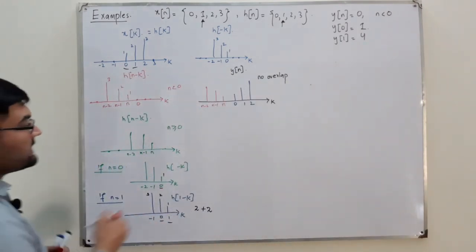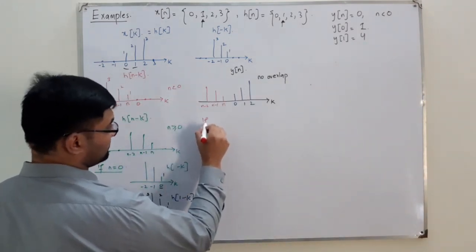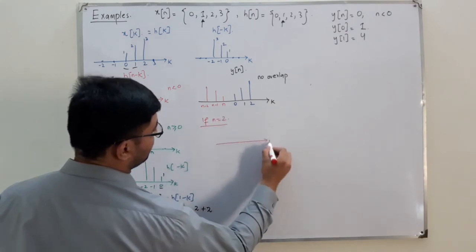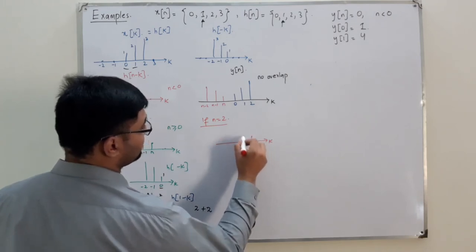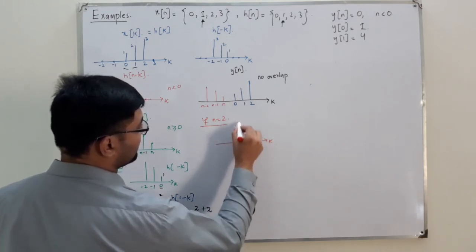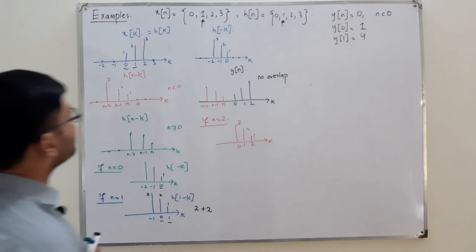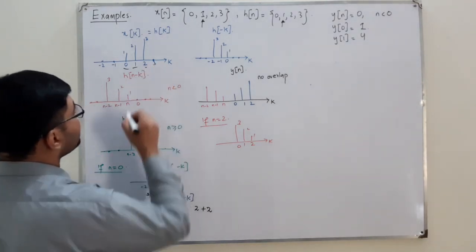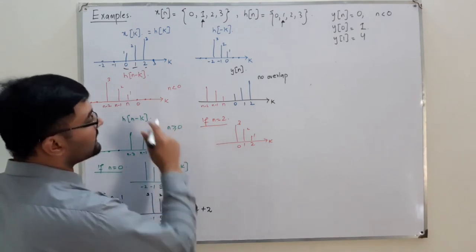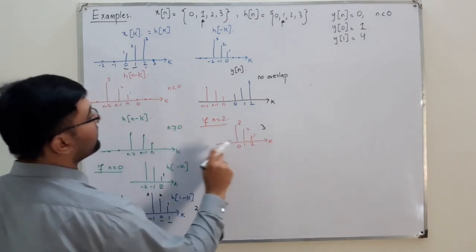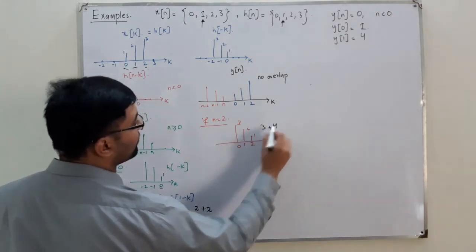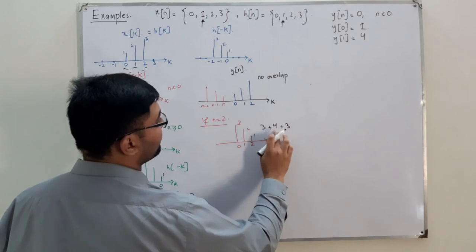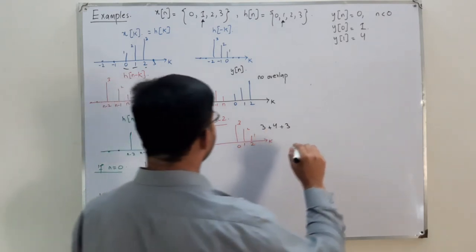For n equals 2, h(2 minus k) is located at 2, 1, and 0. The product exists at all three points 0, 1, and 2. At k=0: 1 times 3 equals 3. At k=1: 2 times 2 equals 4. At k=2: 3 times 1 equals 3. So y(2) equals 3 plus 4 plus 3 equals 10.